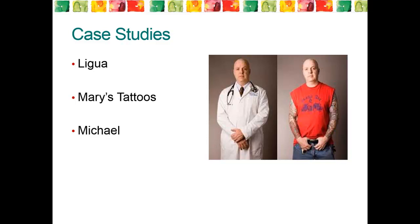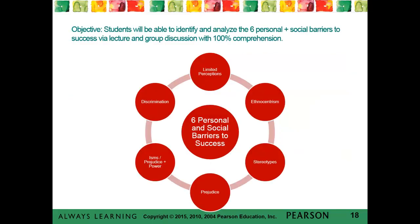There are several case studies mentioned at the end of our text — please take a look and review those. Our objective was met today: we did identify and analyze the six personal and social barriers. I hope you found this chapter helpful in determining who you are as a person and taking a look at those issues and barriers that can get in the way of success for yourself and for people around you.